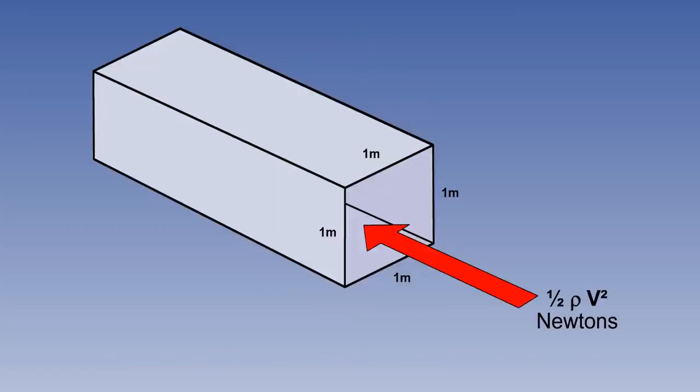In a tube of an area of 1 square meter, a force of half rho v squared newtons will be generated.